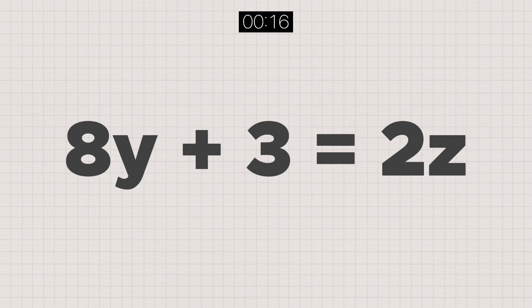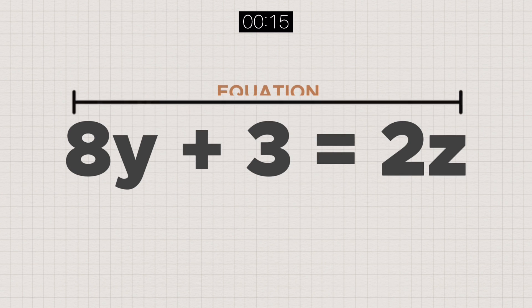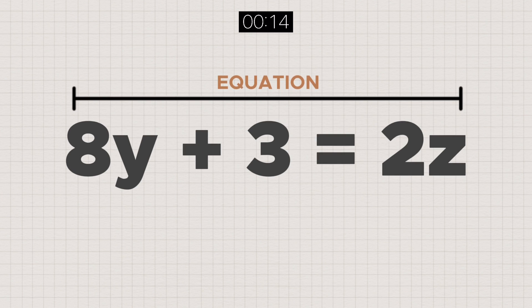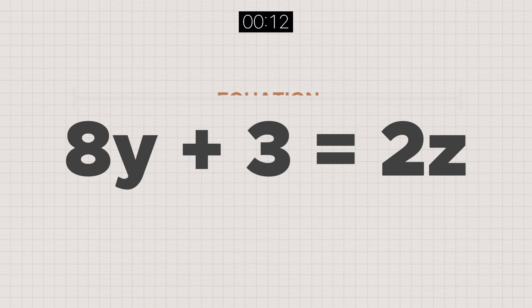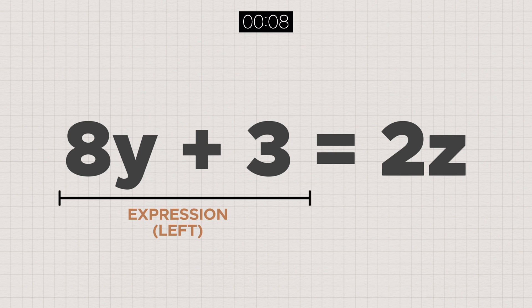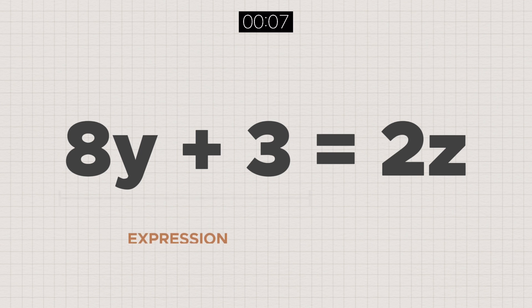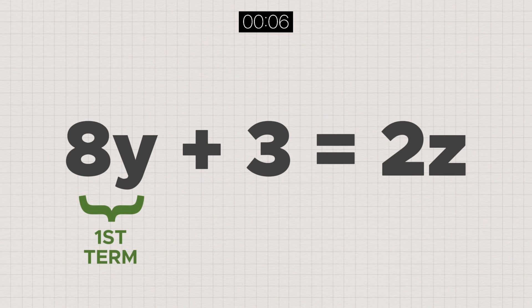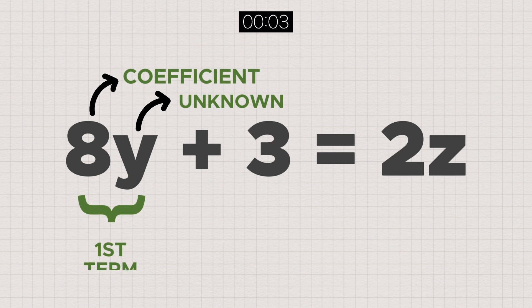Let's do a recap. We have here an algebraic equation, equated with an expression on each side. In the left hand side expression, the first term has an unknown, y, and a coefficient, 8.